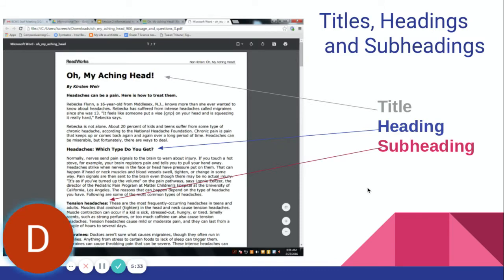Some of the most important text features have to do with what they actually write. Now we have titles, headings, and subheadings. In this illustration, you'll see that the title's at the top of the page and it's larger than anything else. The title usually gives you an idea of what the main idea or central idea of the whole article is going to be about. It should catch your attention.